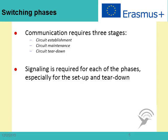Circuit switching technologies require three main stages: circuit establishment, circuit maintenance during the data transfer, and then circuit teardown. Signaling is required for each of these phases, especially for the setup and teardown.